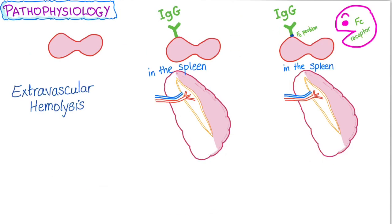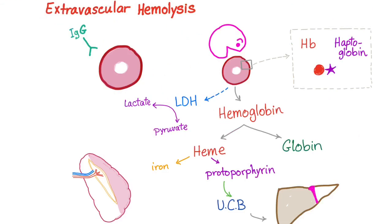Pathophysiology is quite simple. You have your red blood cell getting coated with IgG. The macrophage will recognize the Fc portion on the IgG using the macrophage's Fc receptor in the spleen — therefore, extravascular hemolysis.